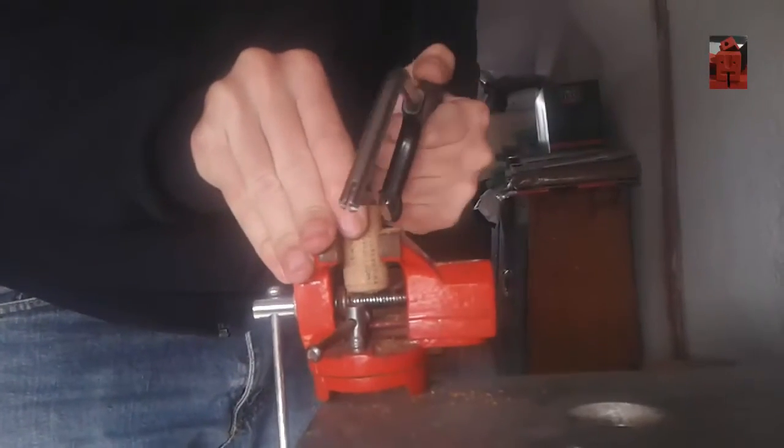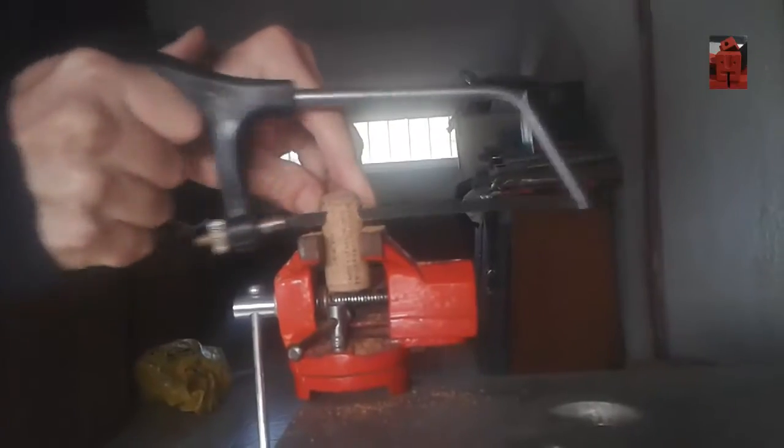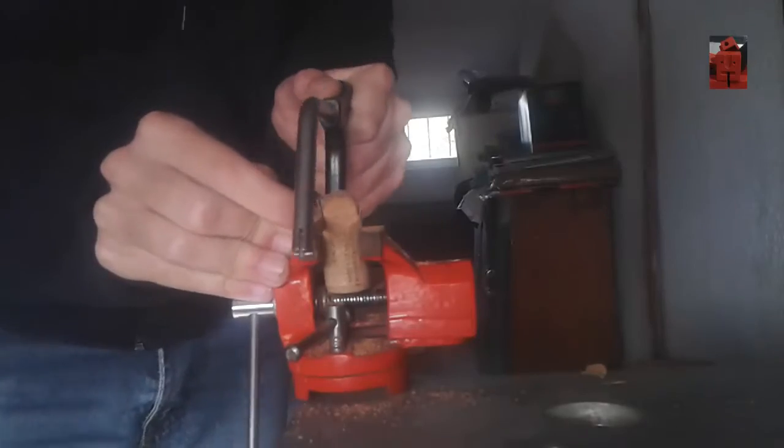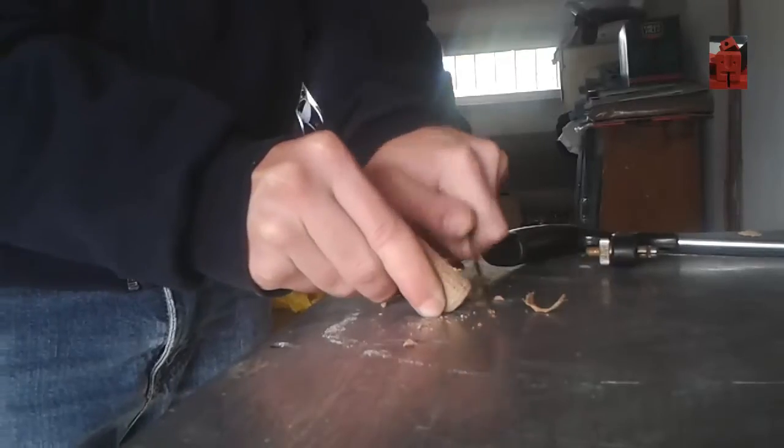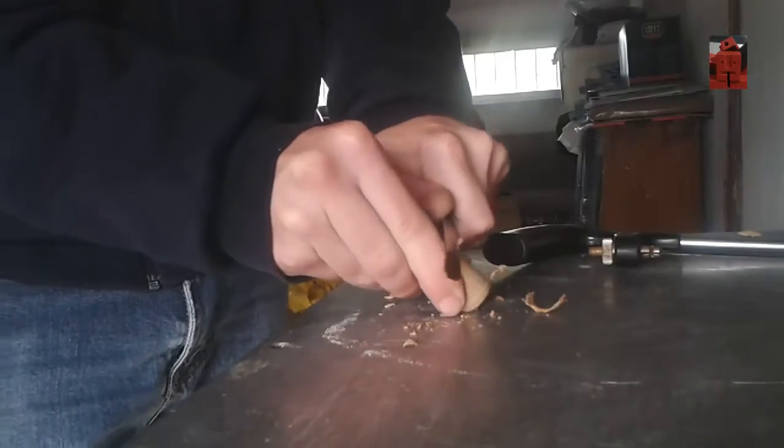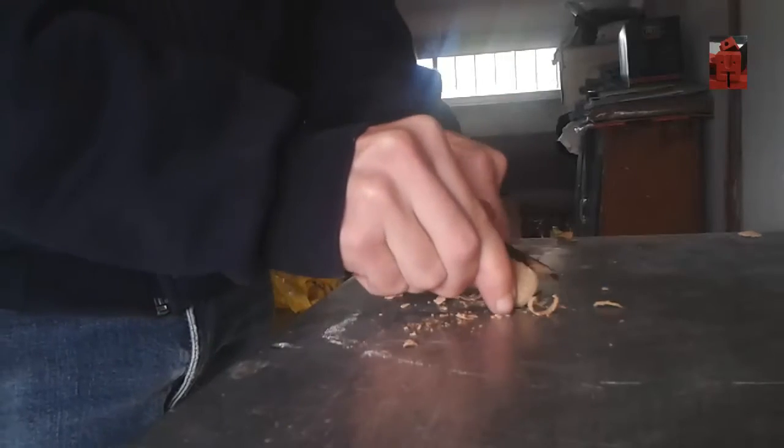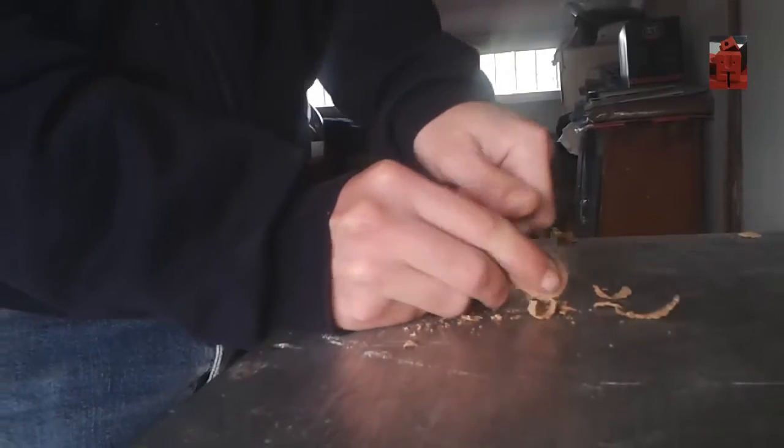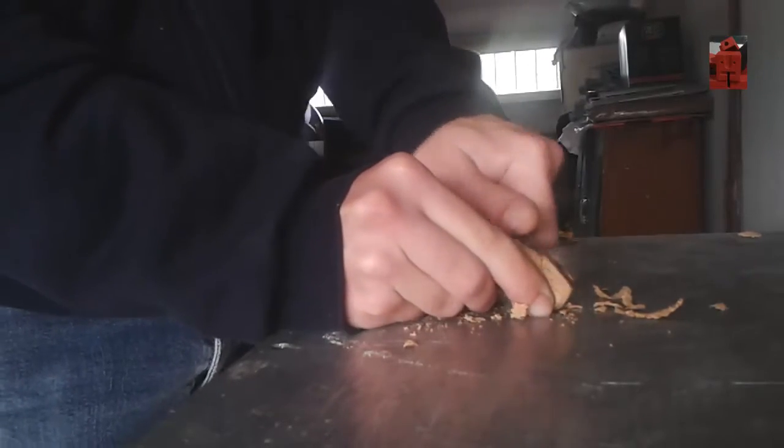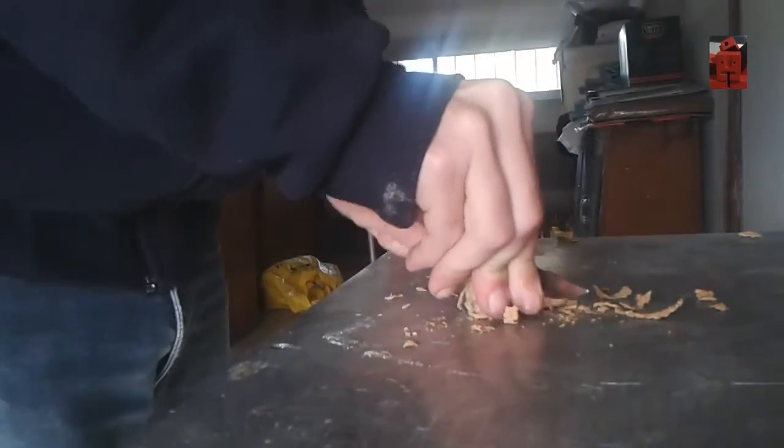So to cut the cork you can use a saw, or even a knife will do the trick nicely. In fact, I found out that with the knife I had a little more control over the cuts. It took a way longer, but it was worth it.